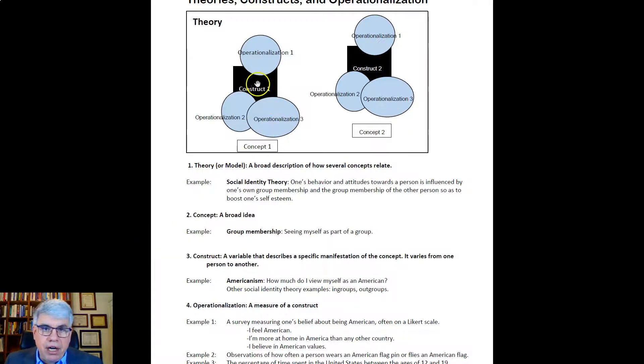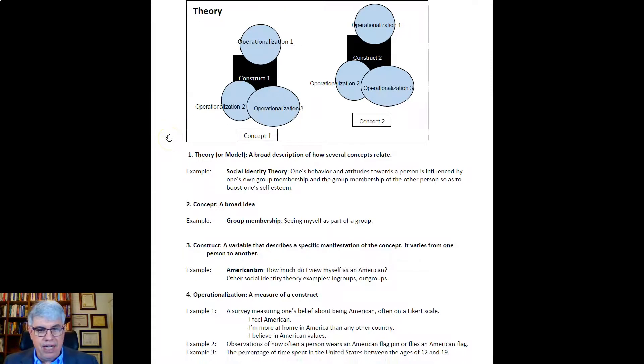For each construct, there's different operationalizations, and that means there's different ways of measuring it. And even though the construct might be defined real clearly or real broadly, the operationalizations can be extremely different. They'll be measuring different aspects of that construct. Here's three examples of operationalizing Americanism.